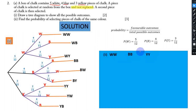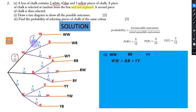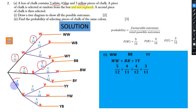We add P(WW) + P(BB) + P(YY). For WW: multiply 5/12 by 4/11. For BB: multiply 4/12 by 3/11. For YY: multiply 3/12 by 2/11. Since there is multiplication first, we compute each product before adding.